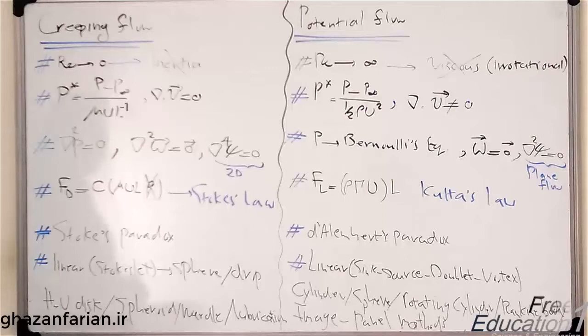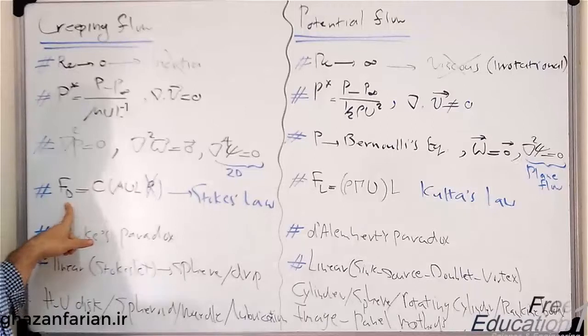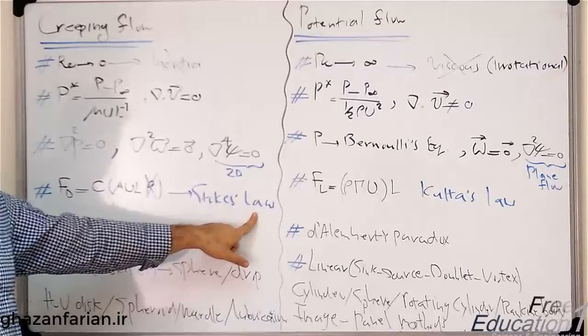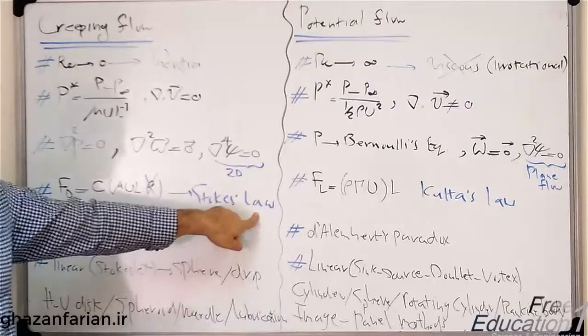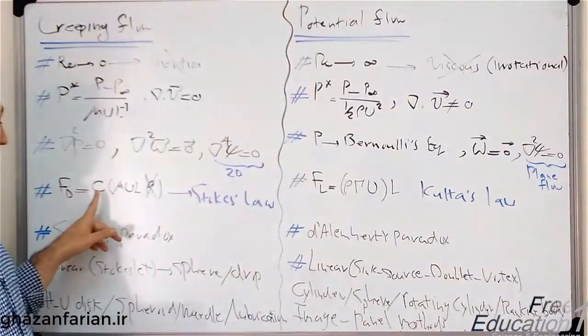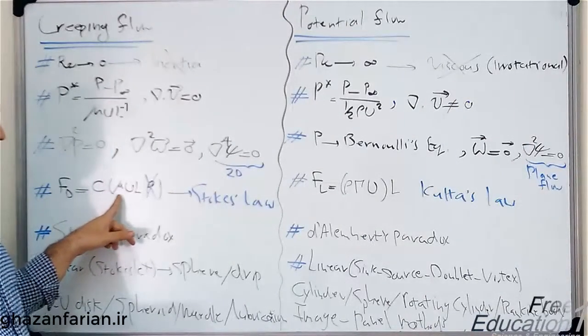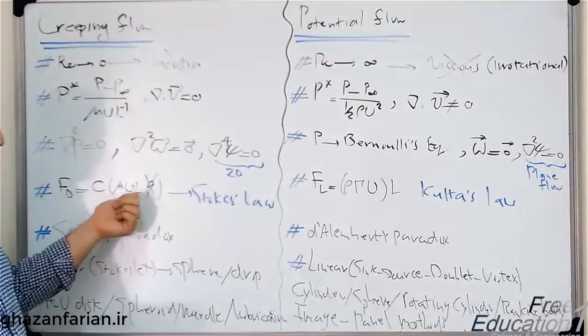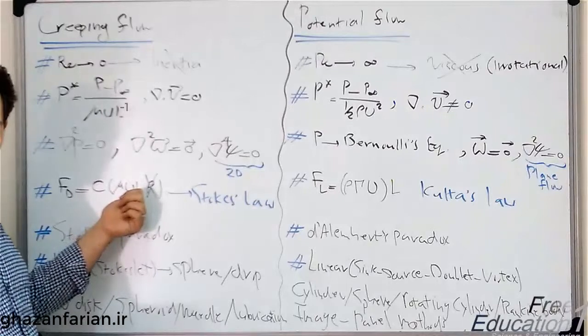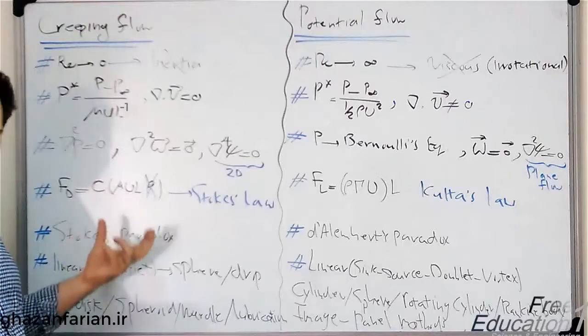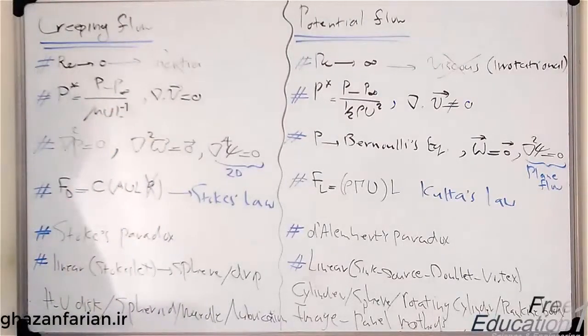About the hydrodynamic forces, the drag force in creeping flow is not zero because viscosity is dominant here. But we have a well-known law called the Stokes law, which says that the drag force equals the product of a constant times three parameters: the velocity and the length scale of the problem. As you see, we don't have the density among these parameters because the inertia is zero in comparison to other forces in the Navier-Stokes equation.